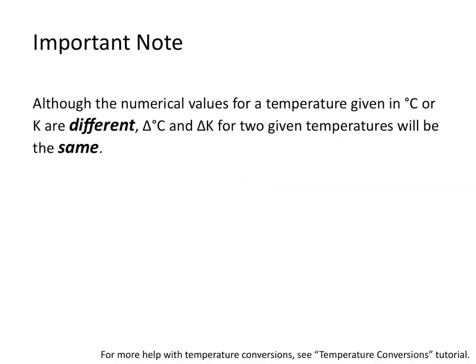Something important to note: sometimes specific heat values will be given to you in joules per gram Kelvin. Although the numerical values for a temperature given in degrees Celsius or Kelvin are different, delta T in degrees Celsius and delta Kelvin for two given temperatures will be the same. Remember that Kelvin equals a temperature in degrees Celsius plus 273, so the absolute values are different numbers. But a change in one degree Celsius is equal to a change in one Kelvin.